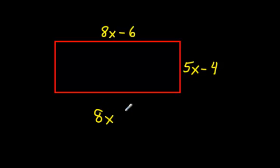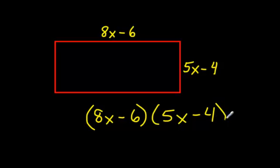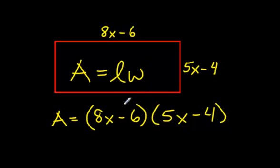And instead of giving you nice easy numbers here, they decided to give you some more difficult binomials here. But they're not that bad. So 8X minus 6, and you're going to multiply that by 5X minus 4. Once again, the reason why we're doing this is because we're trying to find the area of this rectangle. And if you remember the formula for the area of a rectangle, you just go length times width. So here's the length, here's the width.